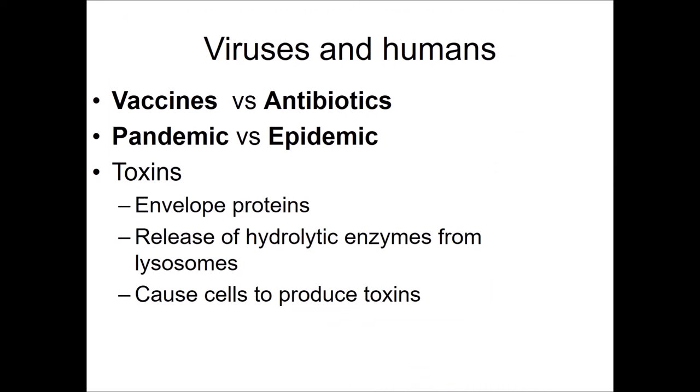Vaccines prime your immune system before infection. This way, your adaptive immune system recognizes a pathogen and can mount a swift and strong response against it before the pathogen can spread through your system. Some diseases weaken your immune system, like measles — a natural measles infection leaves you more susceptible to other diseases, but a vaccine against measles does not.